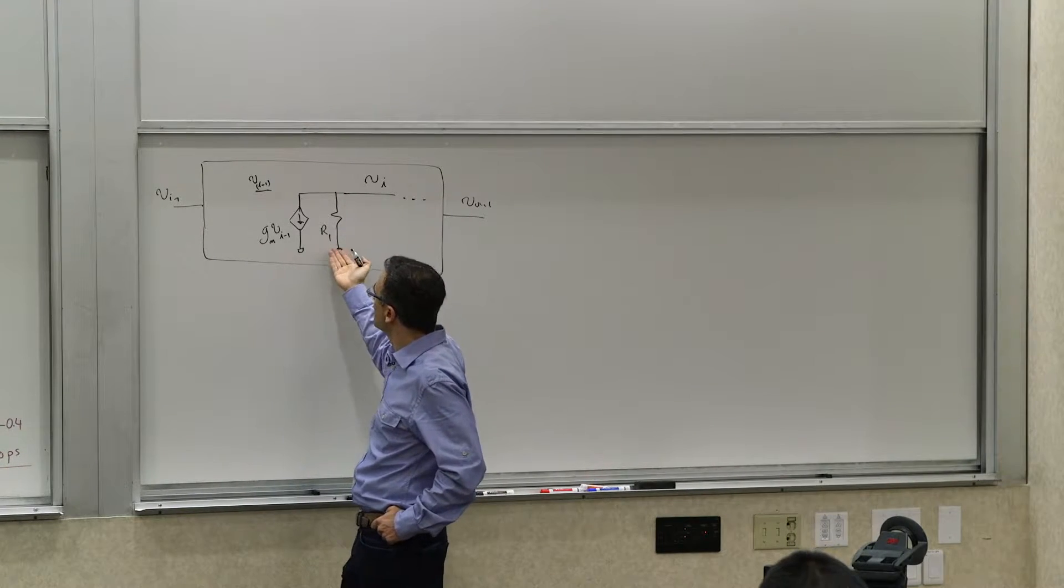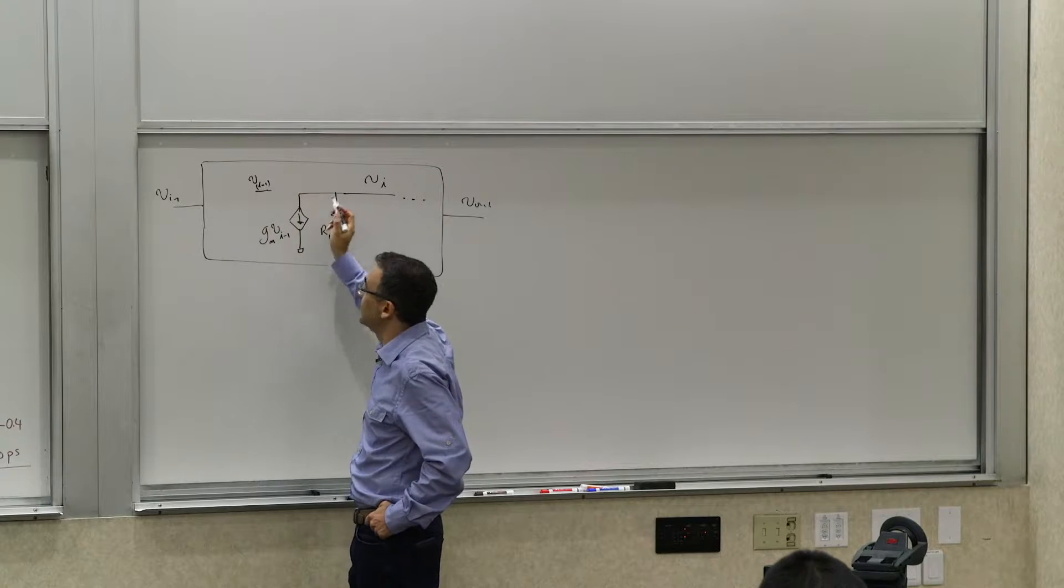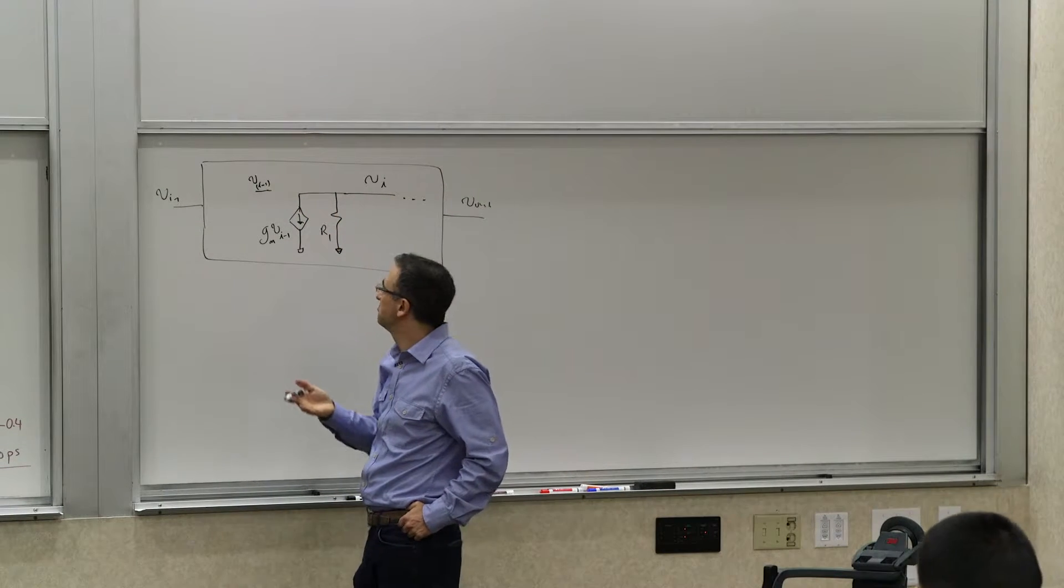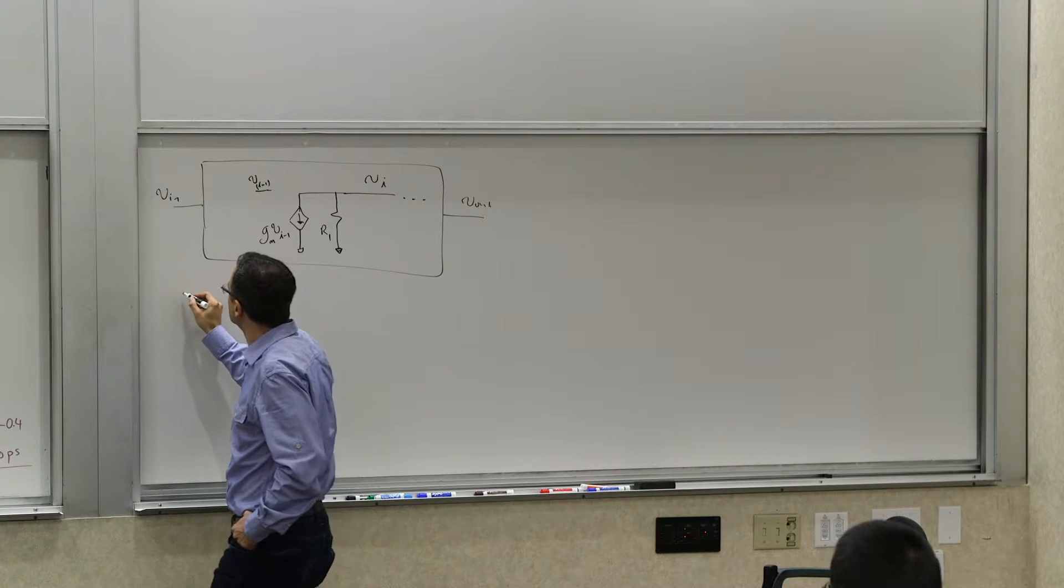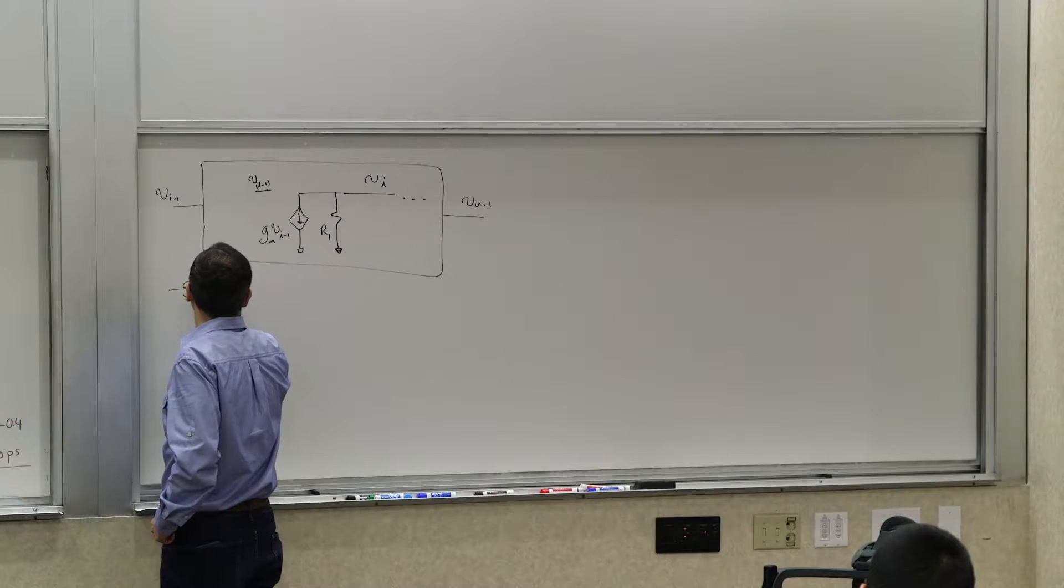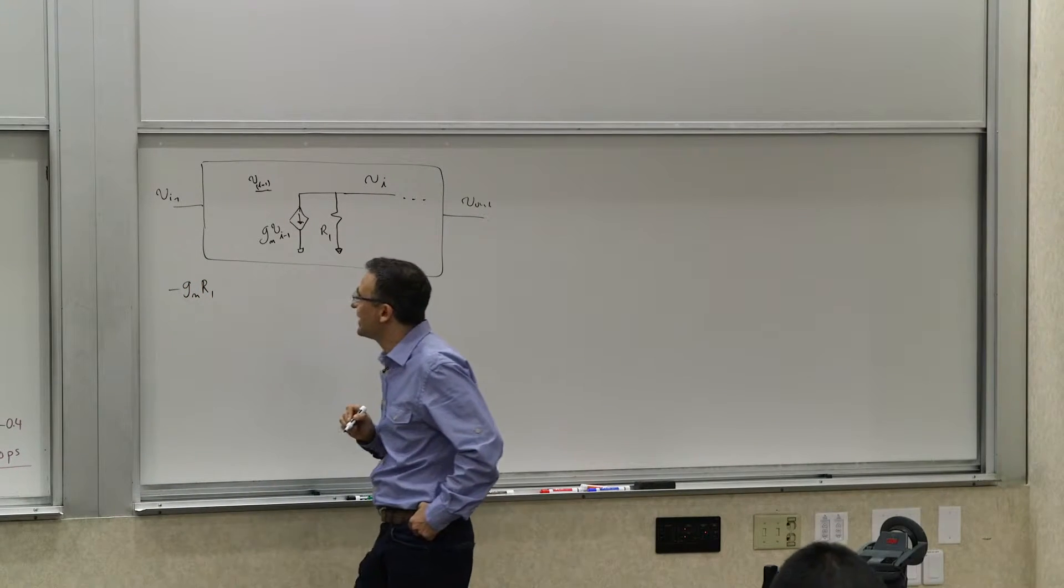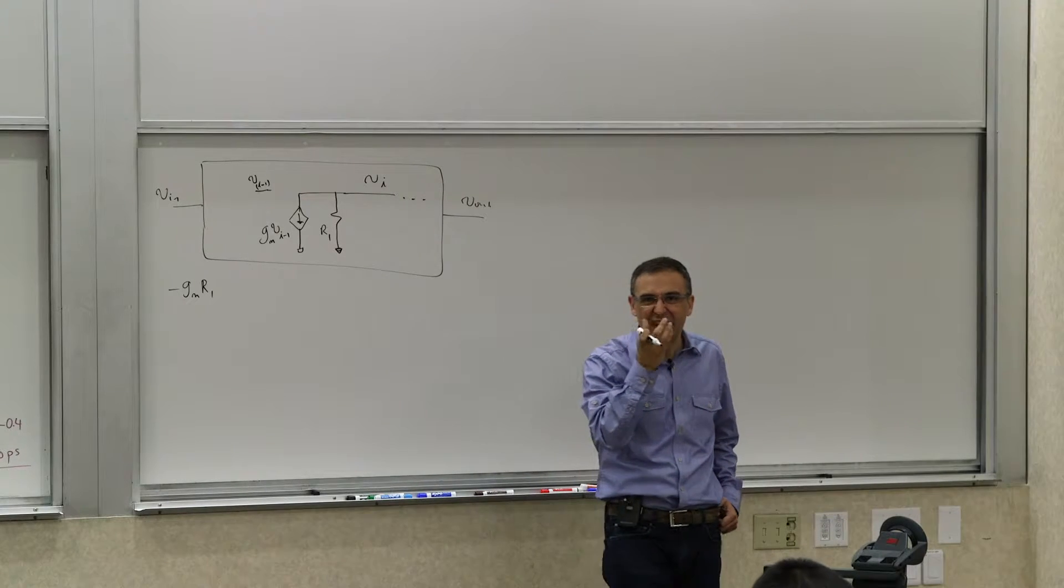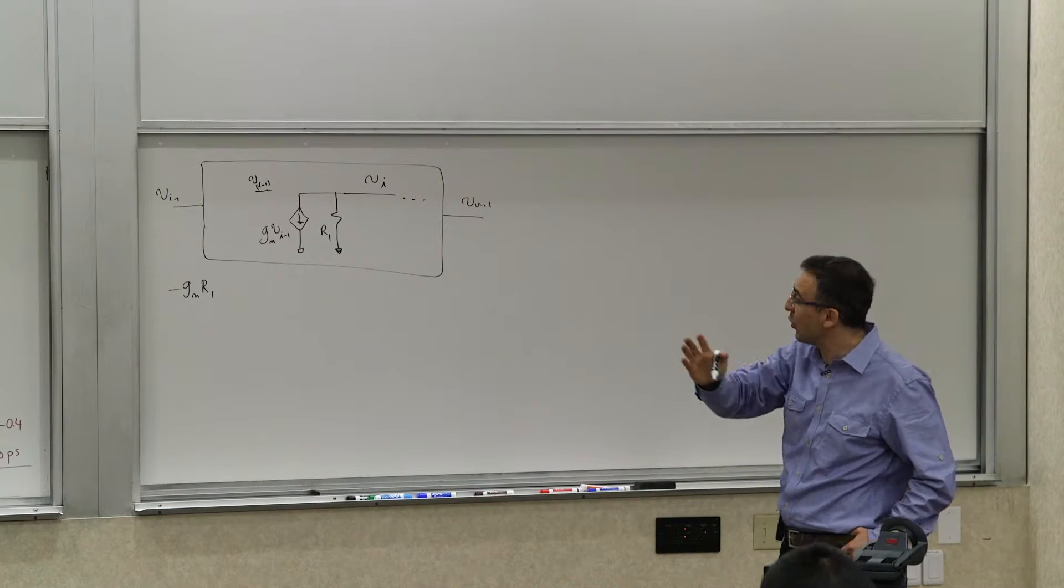The gain due to this stage is simple, right? From here to there. What is that gain? Yeah, negative Gm*R1. So you have that gain for that stage, that part of that, but it has an overall gain.